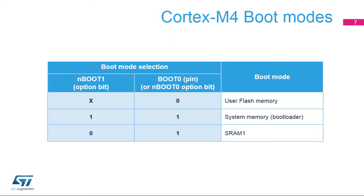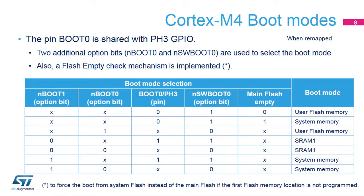There are three boot modes, which are selected by the NBOOT0 option bit or by the BOOT0 PIN and an option bit named NBOOT1. When the BOOT0 PIN or option bit is at a low level, the STM32WB boots from the user flash memory, which is aliased at address 0. This is the standard method of booting the STM32WB. When the BOOT0 PIN or option bit is set at a high level, the NBOOT1 option bit determines the boot mode. Boot mode is selected either by the BOOT0 PIN or the NBOOT0 option bit, depending on the value of the NSWBOOT0 option bit in the flash OPTR register, as shown in this table. A flash empty check mechanism is implemented to force the boot from the system flash memory instead of the main flash memory if the first flash memory location is not programmed.